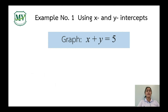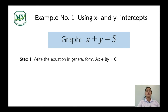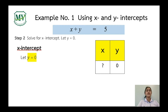Let's graph x plus y equals 5. Step 1: write the equation in general form. Since this equation is already in general form, we proceed to step 2 — solve for the x-intercept. In solving for the x-intercept, always remember that y is always equal to 0. So, x plus 0 equals 5; x equals 5. Our x-intercept is (5, 0).